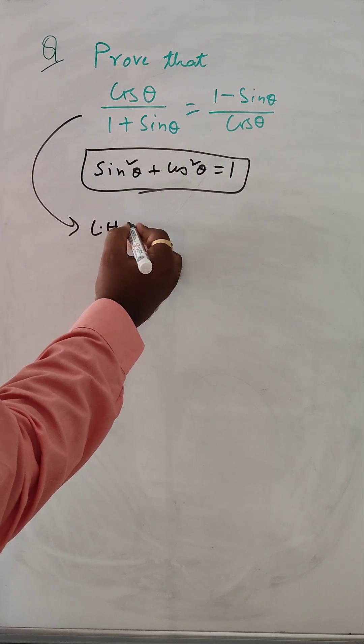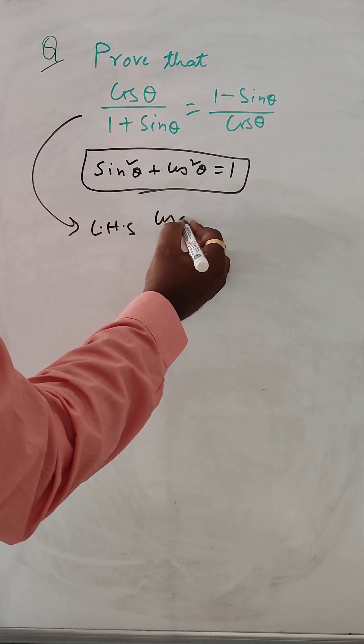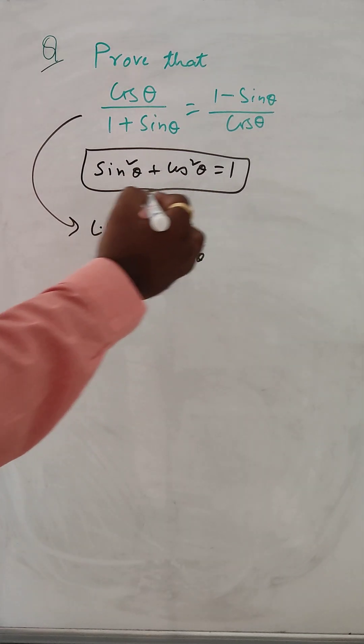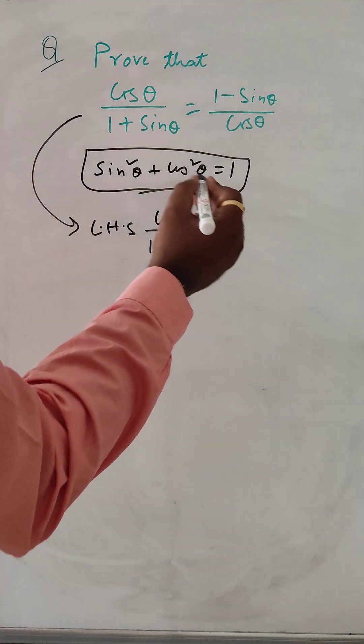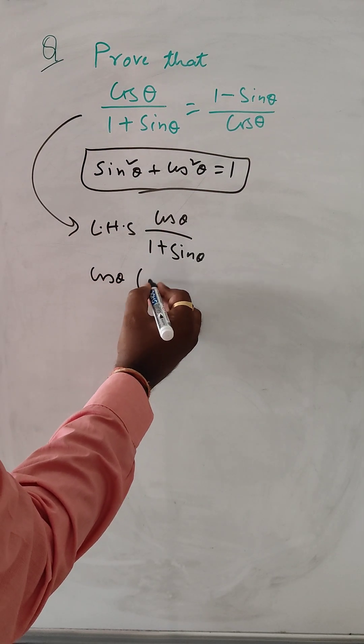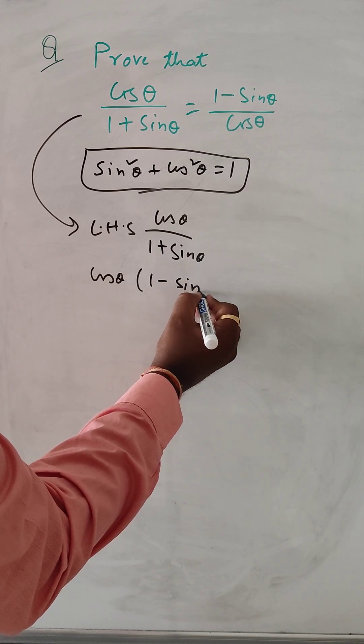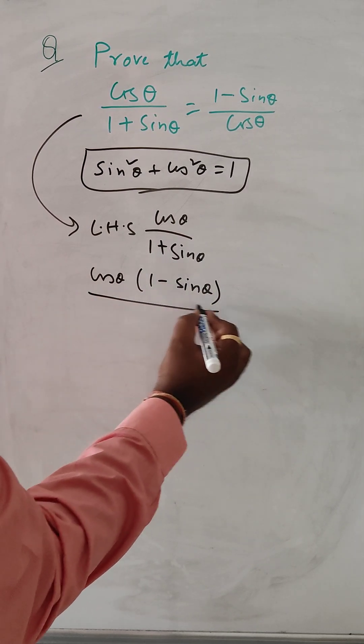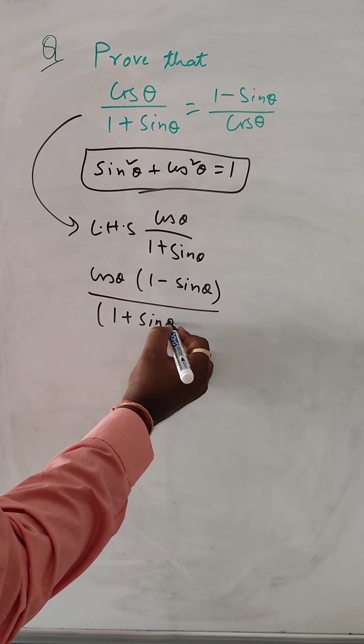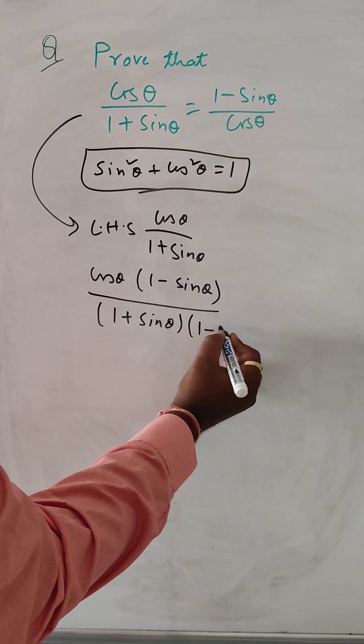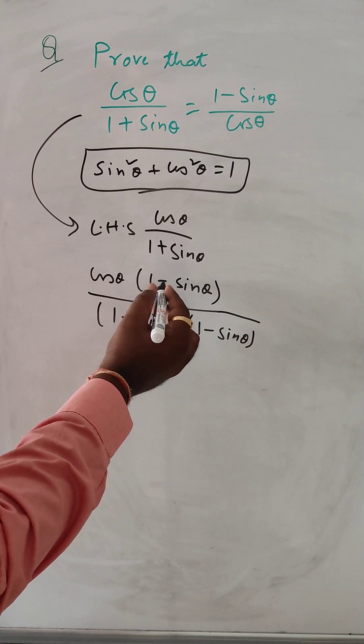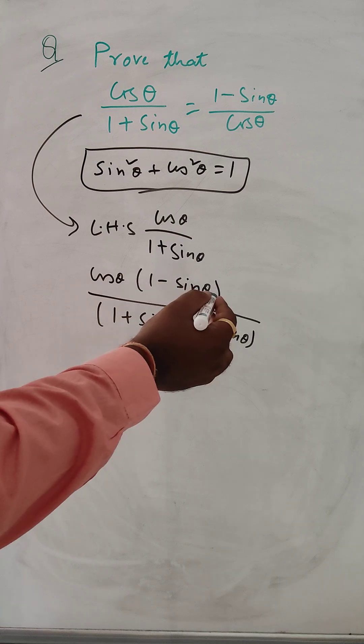cos theta over 1 plus sin theta. We can do rationalization. So cos theta times 1 minus sin theta and here 1 plus sin theta into 1 minus sin theta. So same thing in the numerator and denominator we have just multiplied.